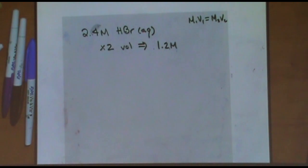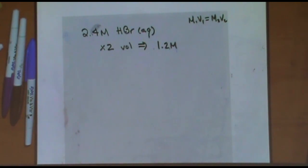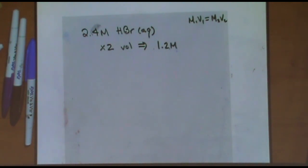So if the volume went up 10 times, what would be my new molarity? If it went up 10 times, the molarity would have to go down 10 times, giving a molarity of 0.24.